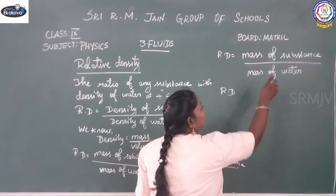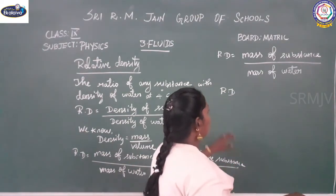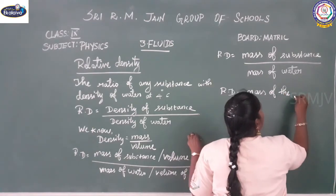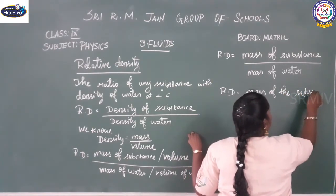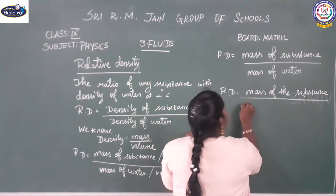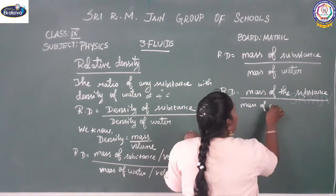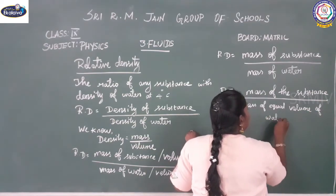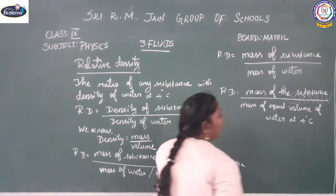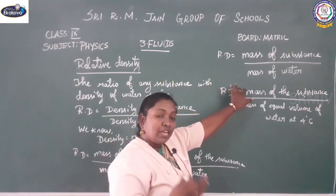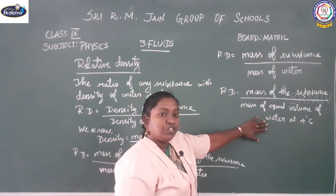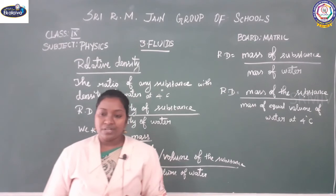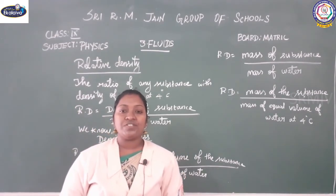The mass of water should be at 4 degrees Celsius, where the temperature remains constant. So the final formula is: relative density equals mass of the substance divided by the mass of an equal volume of water at 4 degrees Celsius. The substance compared to water at 4 degrees Celsius gives you the relative density of any substance. Thank you — we will see you in the next video. Please press the subscribe button to receive the latest updates.